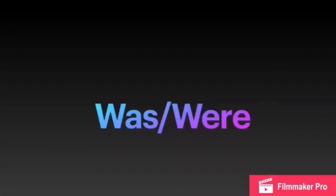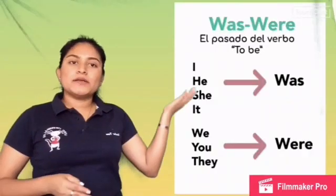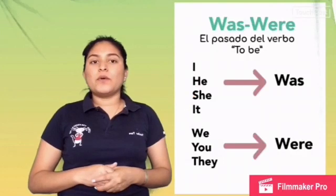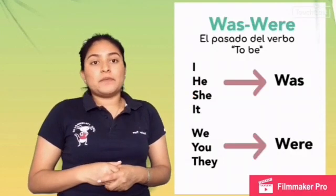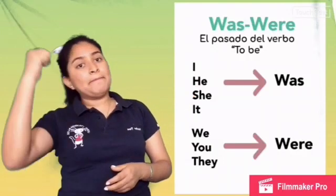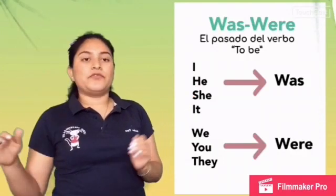This week we talked about different topics like 'was/were' and present progressive. Check the following review about them. 'Was/were' — was/were is the verb 'to be' in the past.